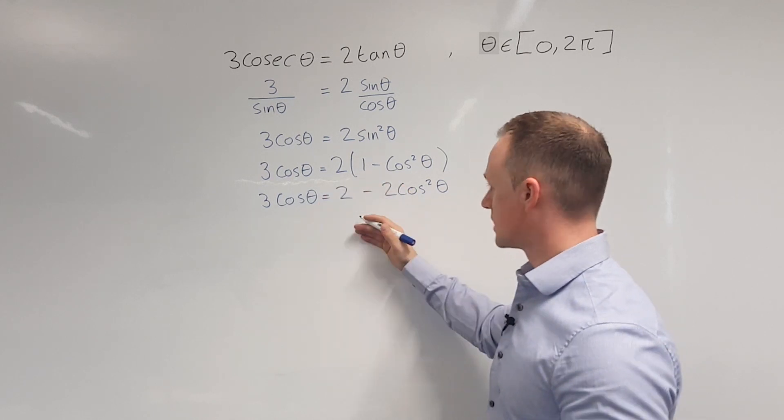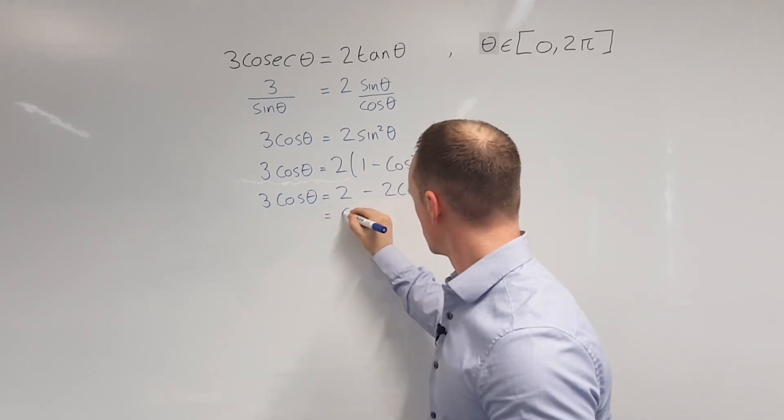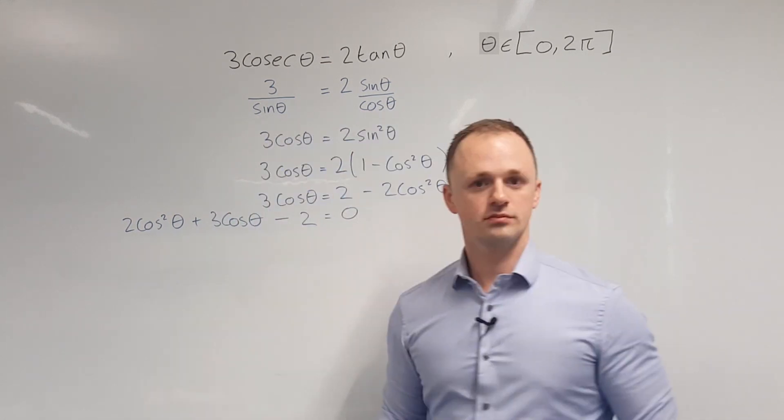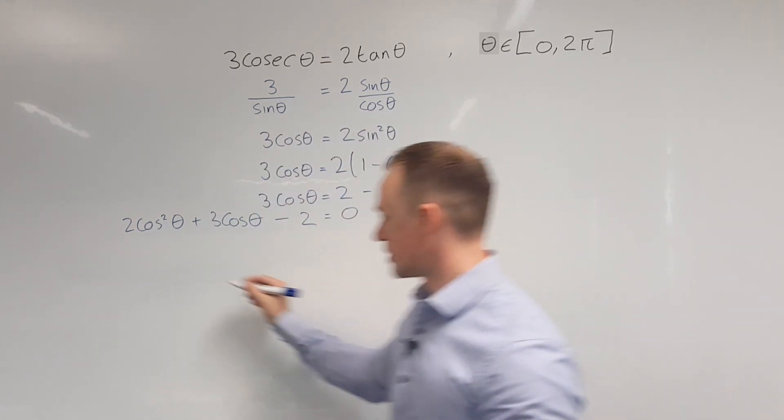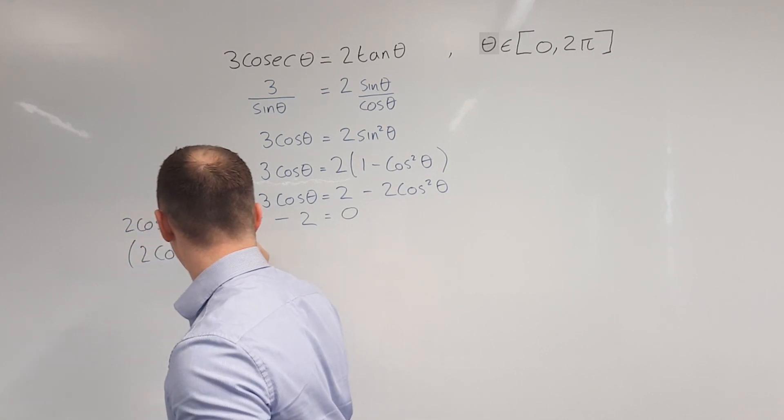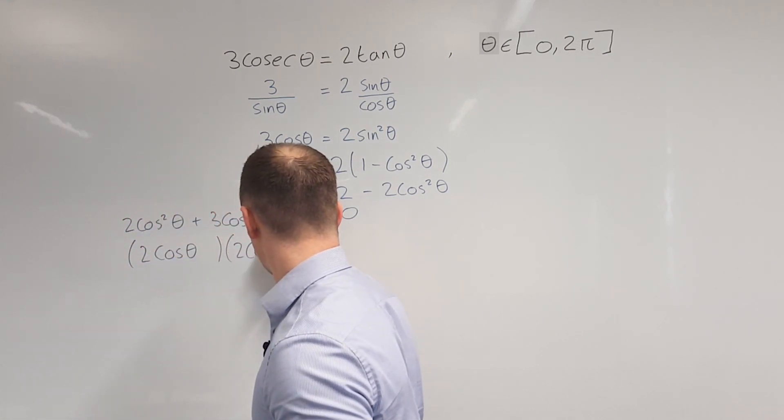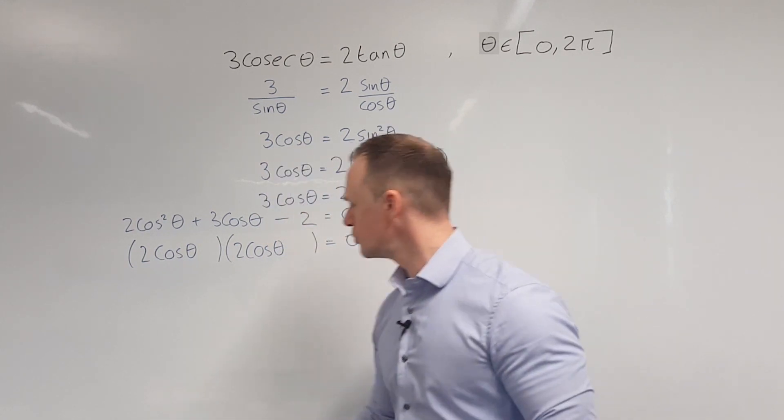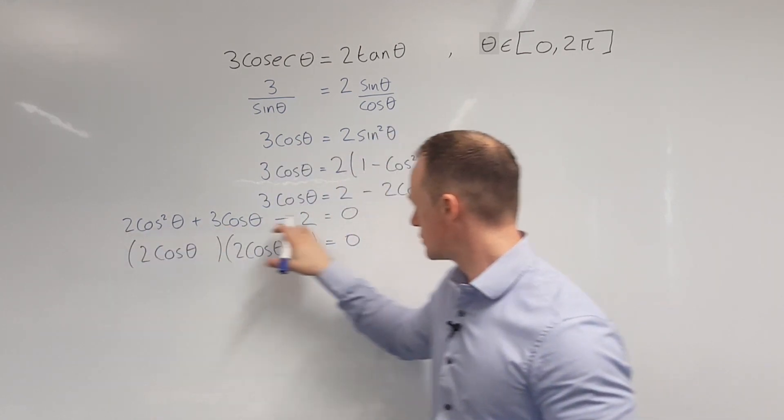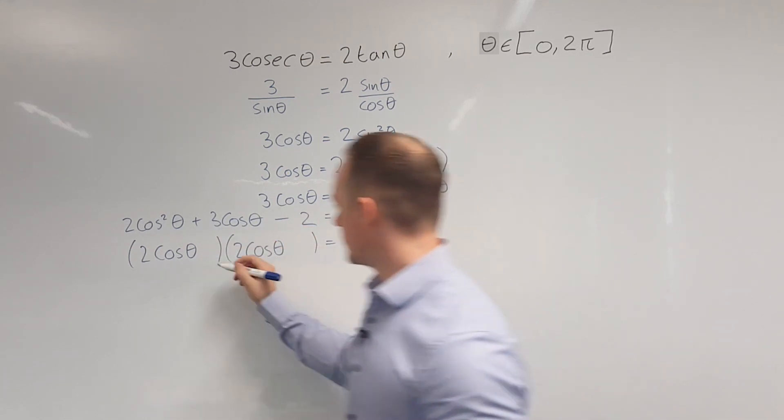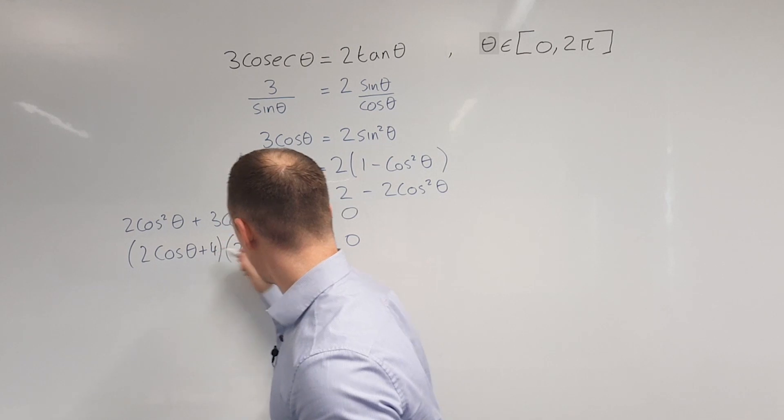From here, I'm going to take all the terms over to the left-hand side. So let's factorise this quadratic. I'm going to put 2 cos theta to begin with in both brackets. And I'm going to look for two numbers that multiply to make 2 times minus 2, which is minus 4, and add to make 3. In this case, I'm going to use positive 4 and negative 1.